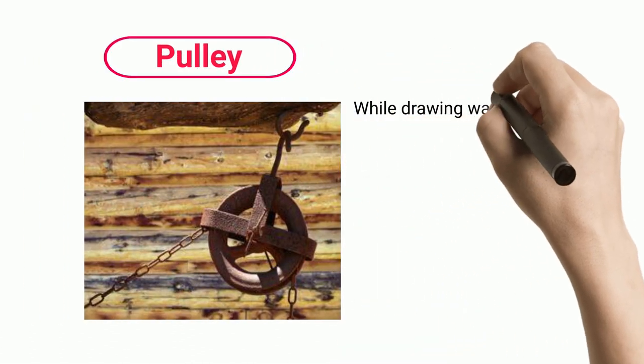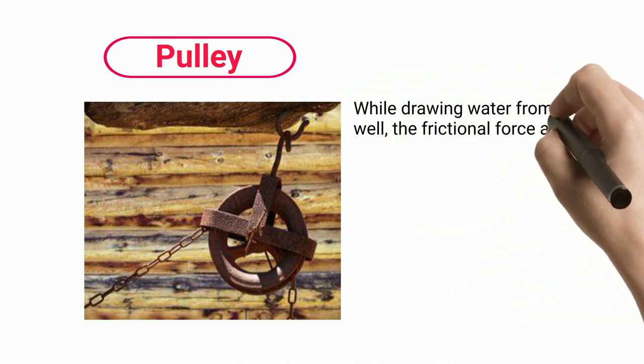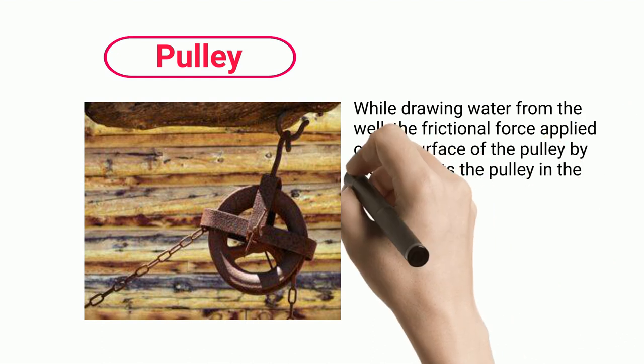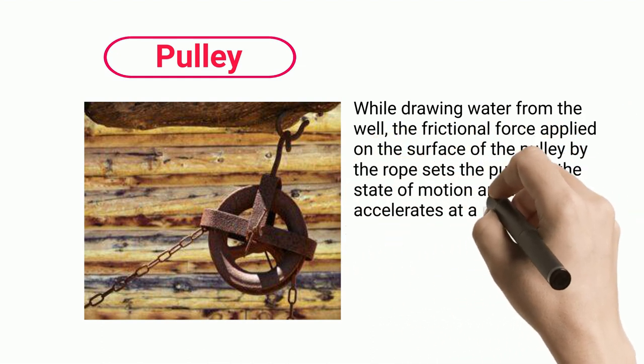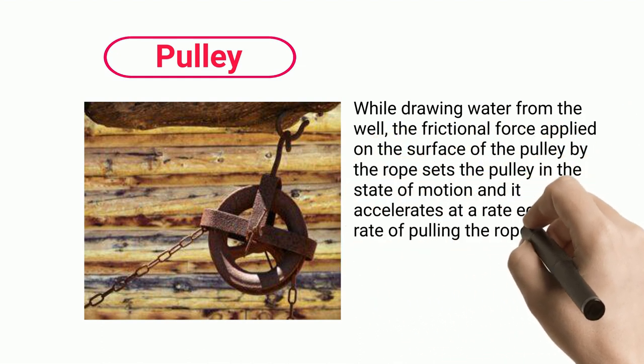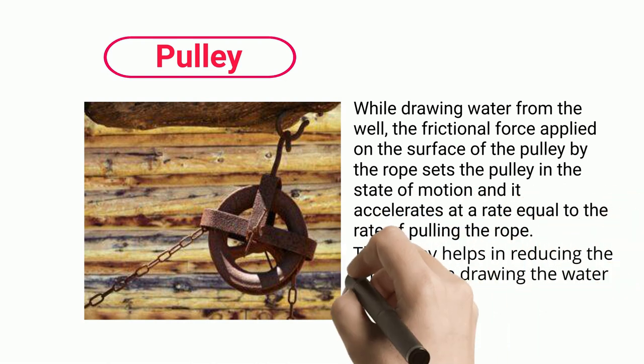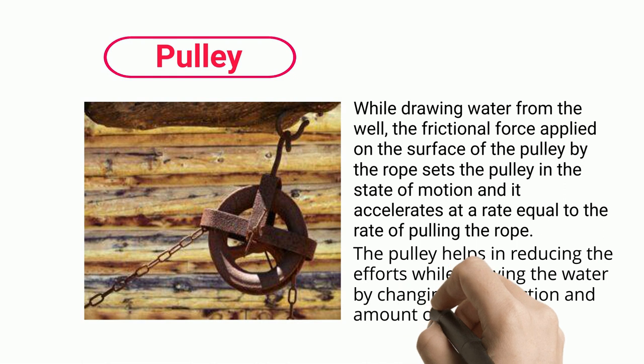Pulley. While drawing water from the well, the frictional force applied on the surface of the pulley by the rope sets the pulley in the state of motion, and it accelerates at a rate equal to the rate of pulling the rope. The pulley helps in reducing the efforts while drawing the water by changing the direction and amount of the force applied.